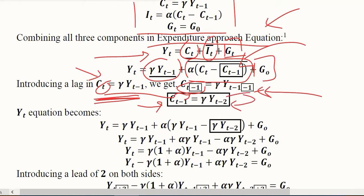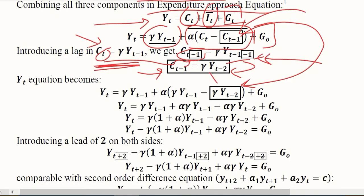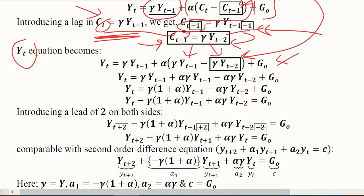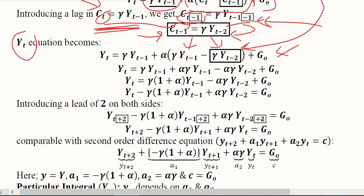Now we have the value of CT minus 1 and you can see we have put it in a box. In the next step the value is substituted, and the benefit is that these C's are now gotten rid of, and only YT or YT minus 1 or any lag or lead of Y is there. G0 is autonomous, considered to be given.